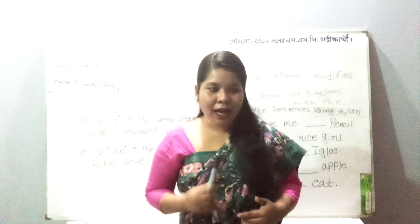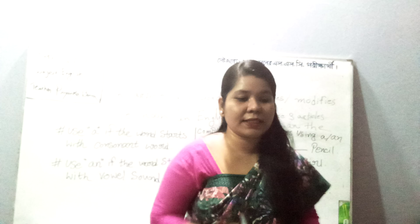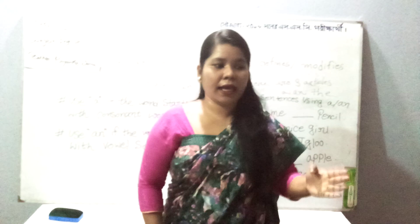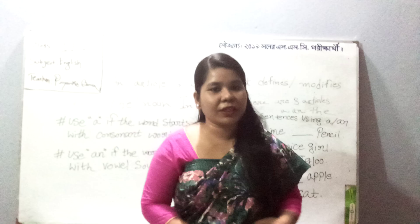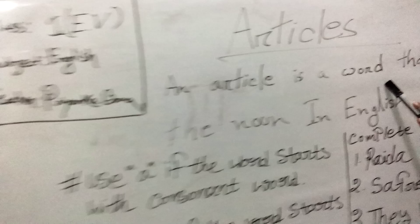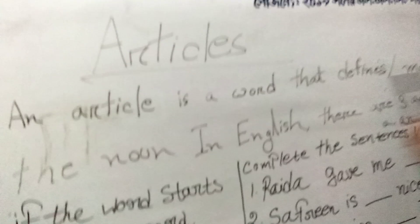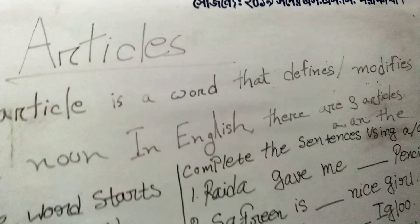What is an article? An article is basically something that modifies the noun, or it is placed just before the noun. In English there are three articles: 'a', 'an', and 'the'. 'A' and 'an' are called indefinite articles, and 'the' is called the definite article. So the definition: an article is a word that defines or modifies the noun.